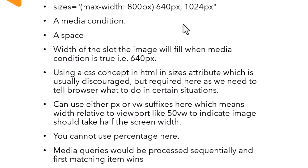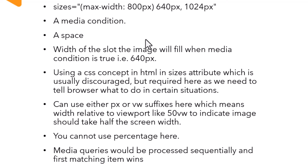The 1024 pixel entry does not follow the same pattern and is specified without a media condition. This is a fallback indicating that if earlier media conditions are not satisfied or not true, then use this size image. Browser matches media queries from the first entry to the next until the fallback, and as soon as it finds a matching one, it uses that and skips the rest — it wouldn't even evaluate them. So ordering media queries is really important.